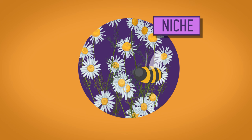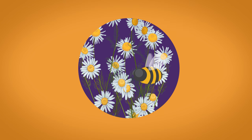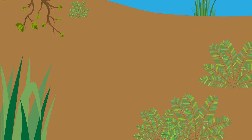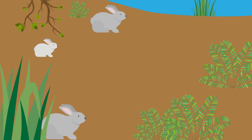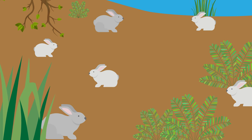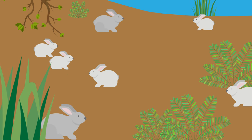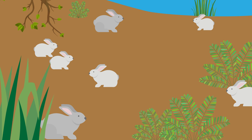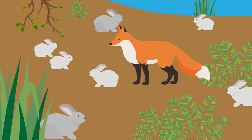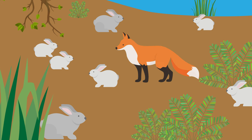A niche describes the role of a species within an ecosystem. So a bee's role is to pollinate the flowers. The rabbit's niche is to be a small grazing prey animal with a very high reproduction rate, which supports many predators in the ecosystem.